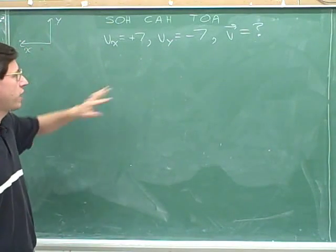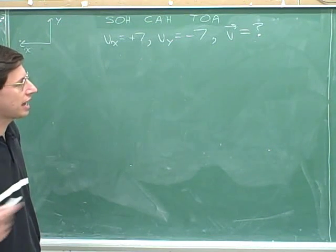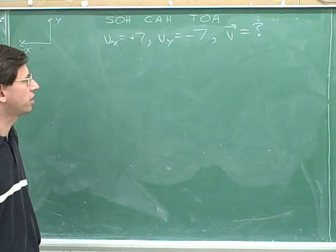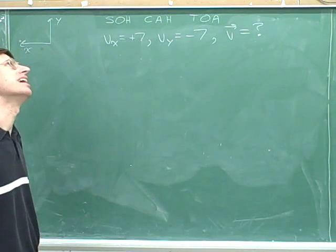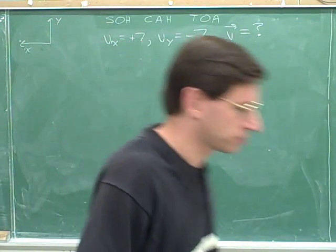Now I have to draw a right triangle indicating the components and overall vector. I could start by drawing the x component, or if I feel like it, I can start by drawing the y component. I feel like drawing the y component first, so I'll draw the y component first here.